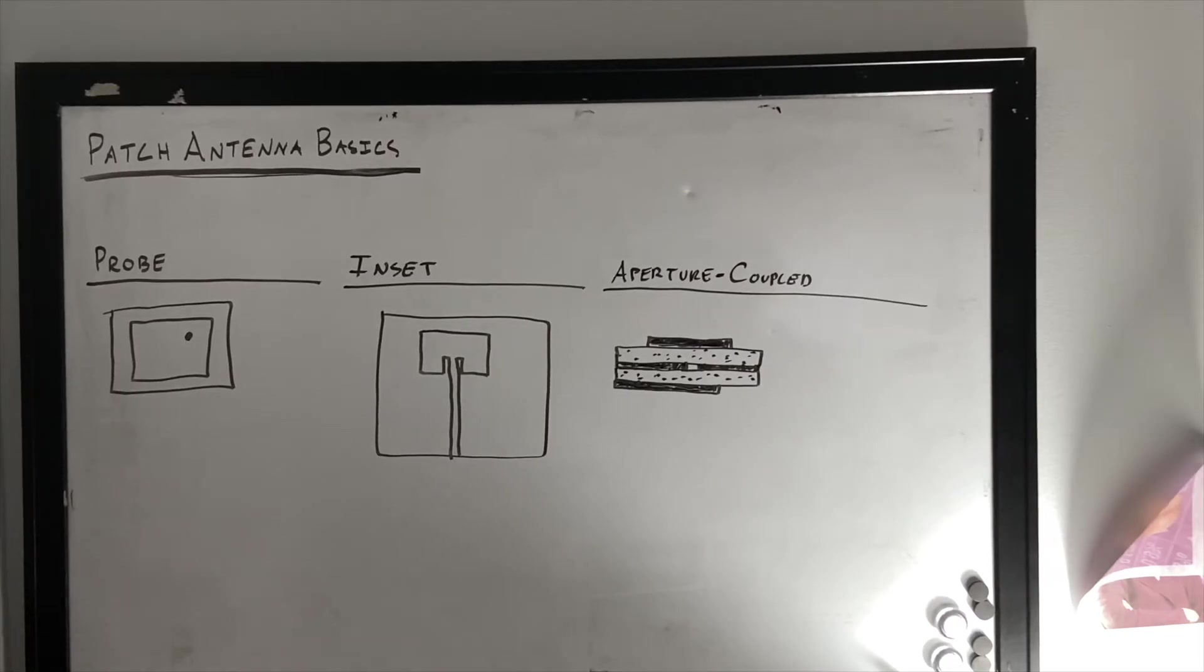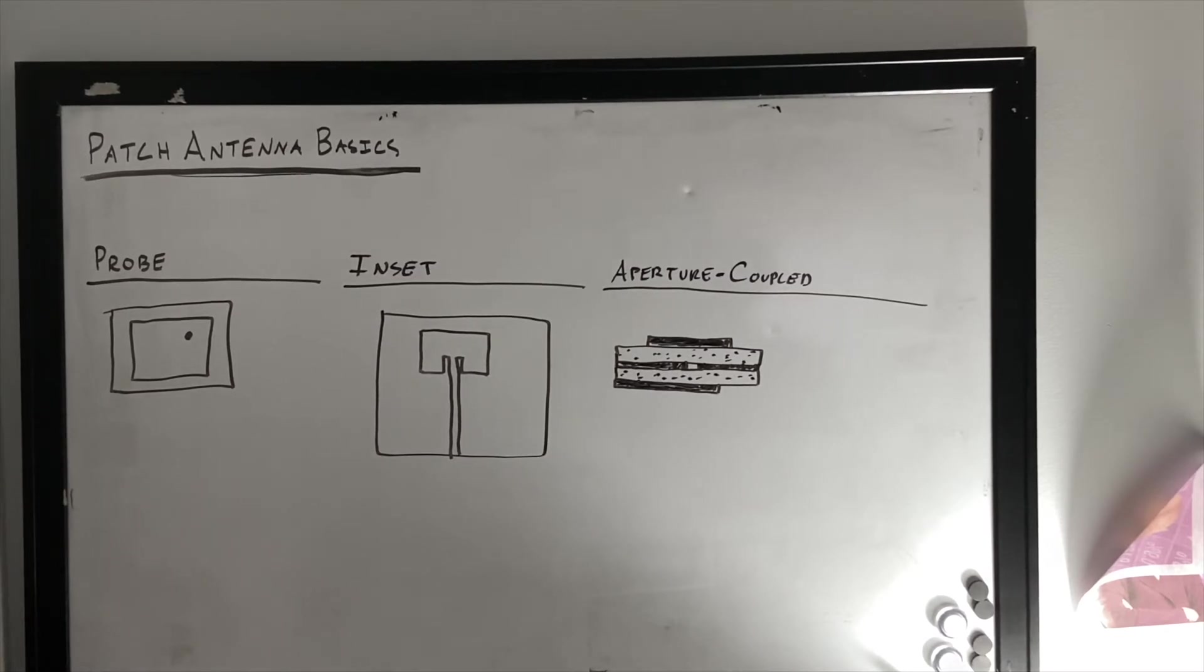Okay, so on the board, I have probably the three most basic ways to feed a patch antenna. The first, which is the one we'll be modeling and simulating in part two, is called the probe feed. And this is essentially a via, but not a via, placed somewhere in the patch, not near the edge, but also not in the middle. And the signal goes from the back through the probe and into the patch. And it's there that the patch radiates.